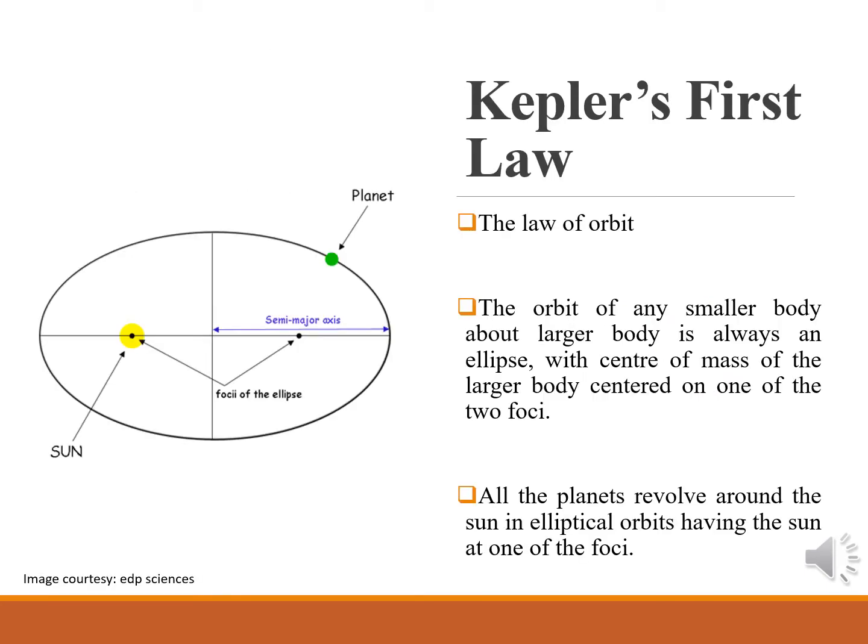Kepler's first law, the Law of Orbit, states that the orbit of any smaller body about a larger body is always an ellipse, with the centre of mass of the larger body centred on one of the two foci. An ellipse has two focal points on the semi-major axis, as shown in the figure. So, all the planets revolve around the Sun in an elliptical orbit, having the Sun at one of the two foci.